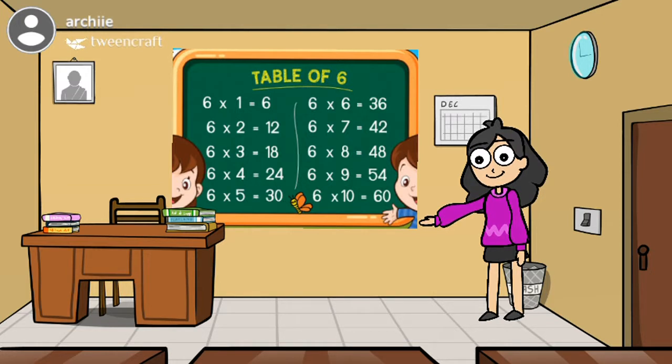6 5s are 30, 6 6s are 36, 6 7s are 42, 6 8s are 48, 6 9s are 54, 6 10s are 60.